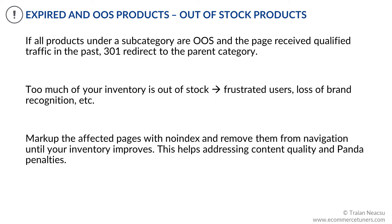If all the products under a subcategory are out-of-stock and the PDP has received qualified traffic in the past, 301 redirect to the parent category. The subcategory page will redirect to the parent category since it doesn't have any stocked products. This may not be the best approach from a user experience perspective, but you may want to preserve eventual backlinks pointing to the PDPs and to the subcategory page. Keep in mind that shoppers may become frustrated if too much of your inventory is out-of-stock — in this case, mark up the affected pages with noindex and remove them from navigation until your inventory improves.